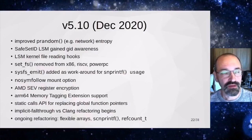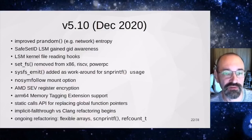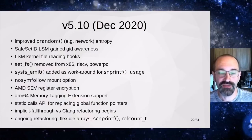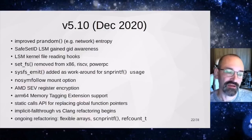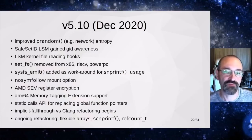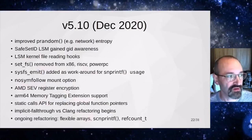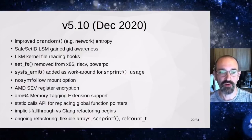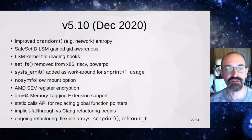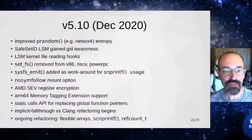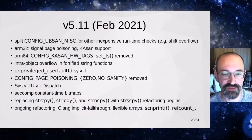Also in 5.10, work started on dealing with implicit fallthrough again, this time for Clang. As it turns out, Clang has a much, much more strict view of what implicit fallthrough looks like, and there's now a whole bunch more implicit fallthrough work to do to get Clang coverage as well.